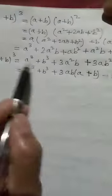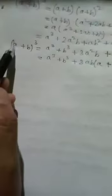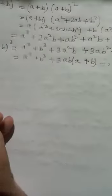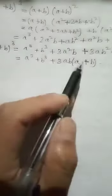So remember: if they say expand, you use the expanded form. If they say factorize, you use the factored form. The formula for (a+b)³ has two forms and you may need to use both — but remember they are the same formula.